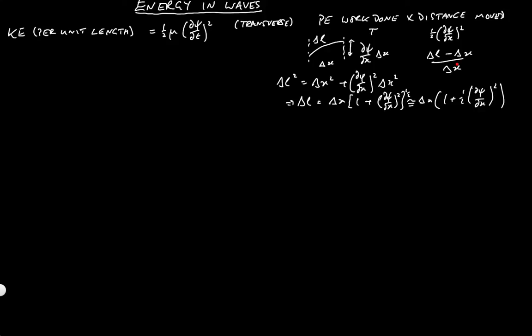And then if you substitute that in to this form up here, delta l minus delta x over delta x, you recover the distance moved being a half dpsi by dx squared.